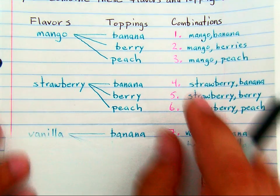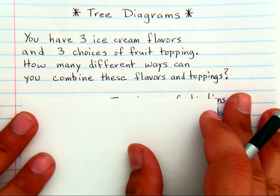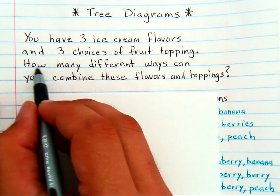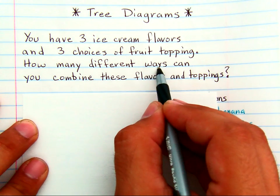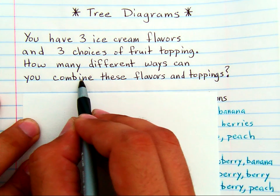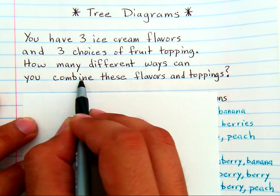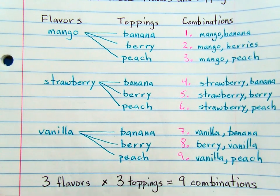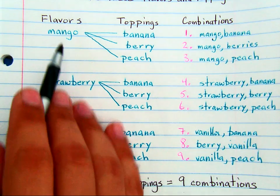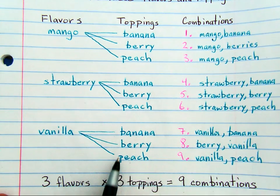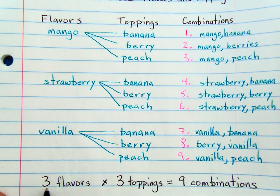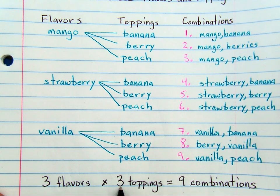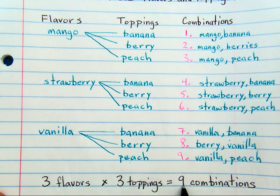When you start to get word problems that ask how many different ways you can combine two things, you will be shown either a chart, an array, a table, or a tree diagram. And you can remember that multiplying option one times option two will give you the total number of combinations.